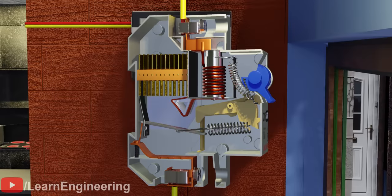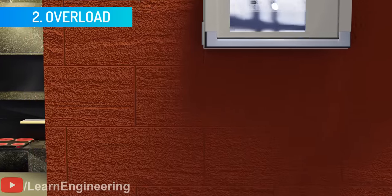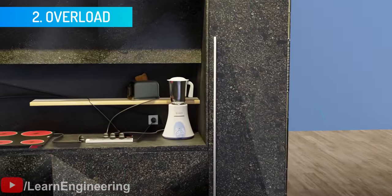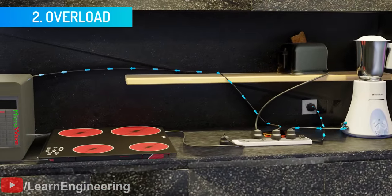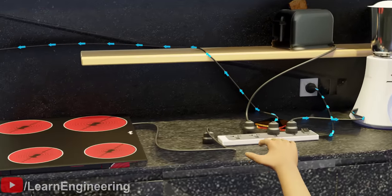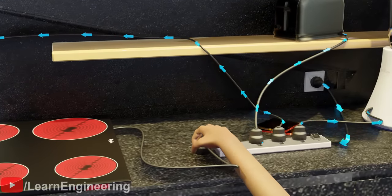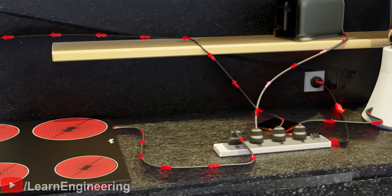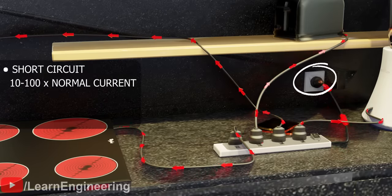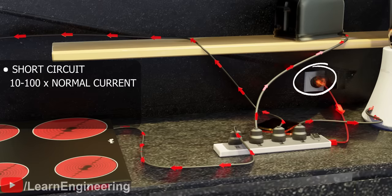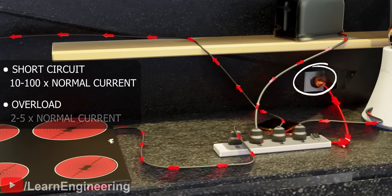Now let's see how the MCB prevents the second type of fault, an overload condition. An overload happens if you find yourself using a number of appliances at once. Since all the appliances in our houses are connected in parallel, such a scenario will lead to an increase in current. This is another dangerous scenario which we need to prevent. The current flow during a short circuit rises by 10 to 100 times the rated current, but in overload, it only rises 2 to 5 times.